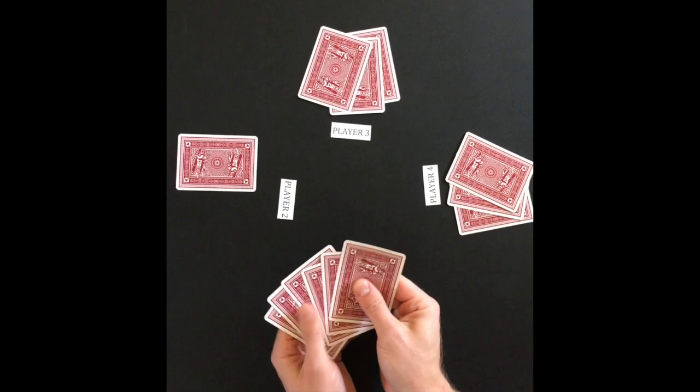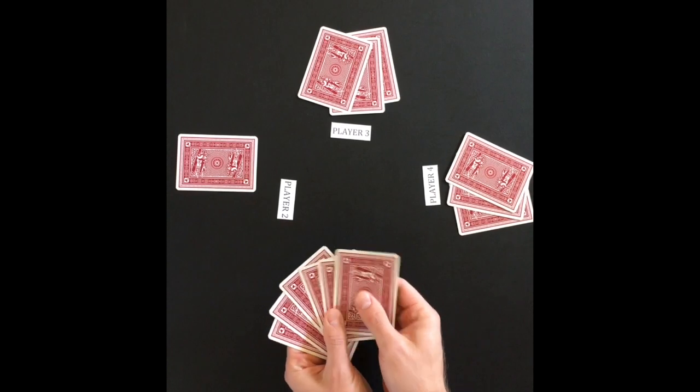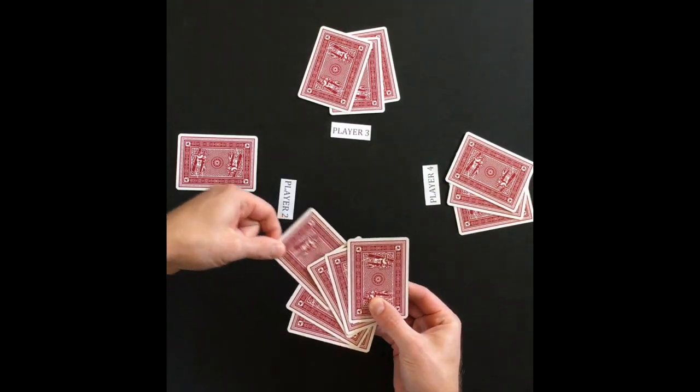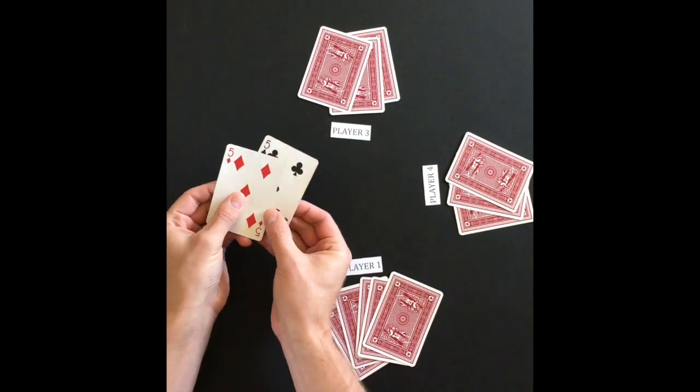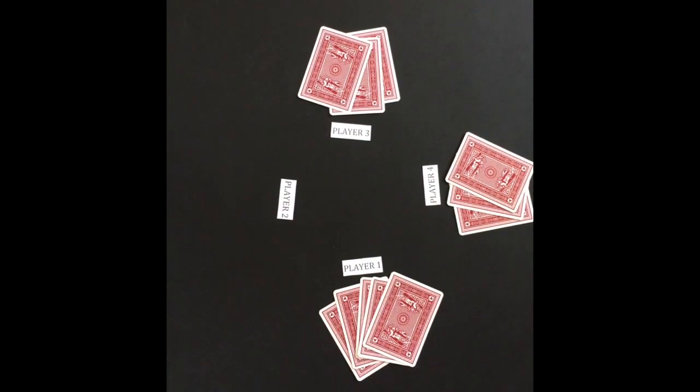Once a player pairs up all the cards in their hand, they are out of the game and safe from becoming the Old Maid. Player 2 paired up all their cards and is safe for this game.